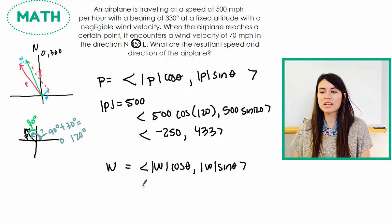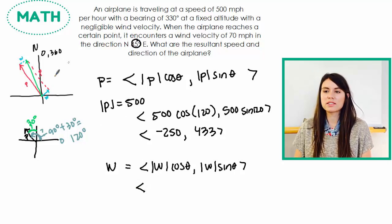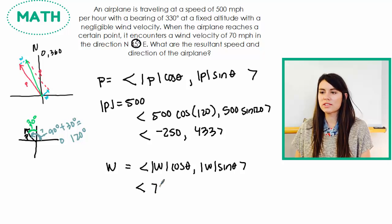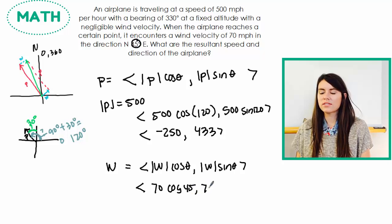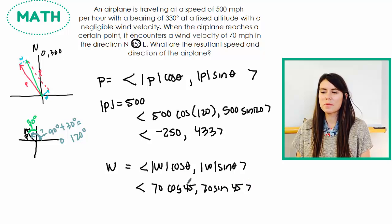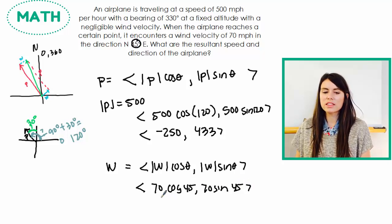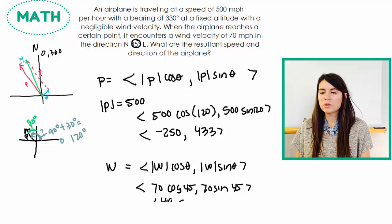So either direction I go, it's going to be 45 degrees because it's in quadrant one and it's halfway between. So I know that my theta for my wind is 45. So I do 70 cosine 45, 70 sine 45, and since sine and cosine have the same measure at 45 degrees, these are both going to be the same, which is 49.5.